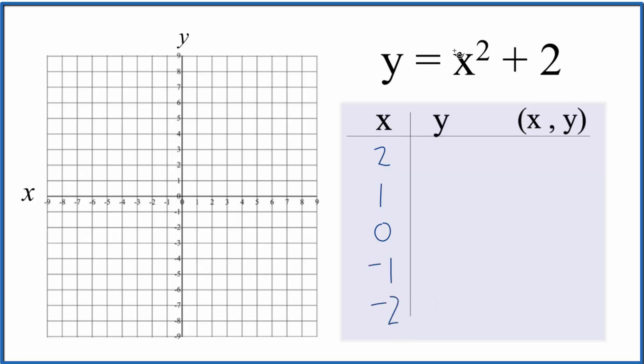So if we put 2 in for x, 2 squared is 4 plus 2, that gives us 6. For x equals 1, 1 squared is just 1, plus 2 is 3. 0 squared is 0,